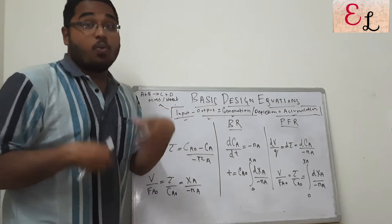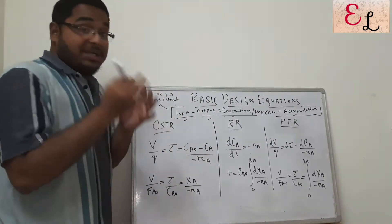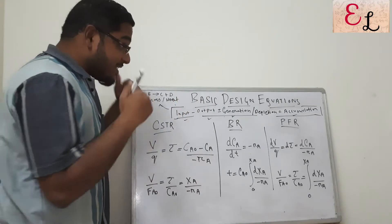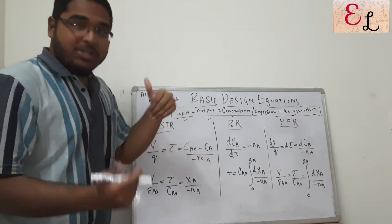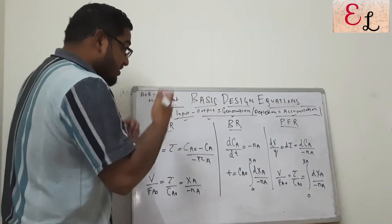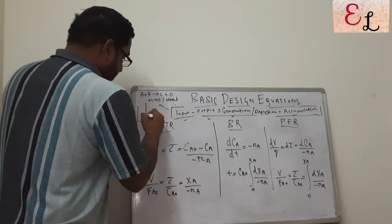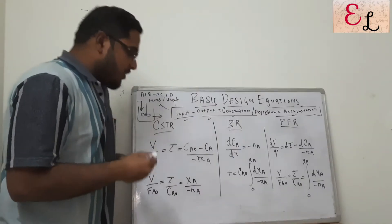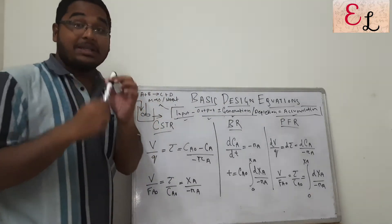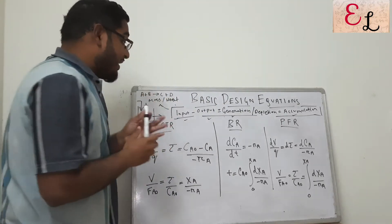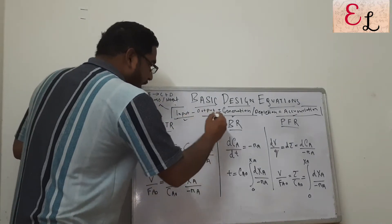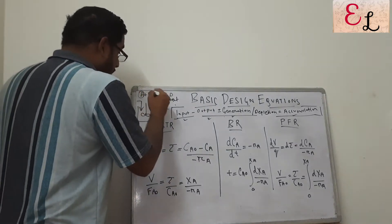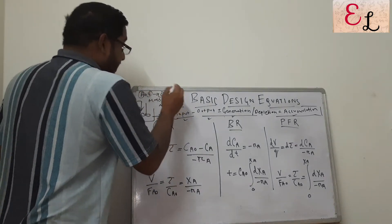Now let's talk about what happens in a continuous stirred tank reactor. As the name suggests, CSTR is a continuous process — the input is continuous, the output is continuous, and there is continuous stirring in the system. There is a continuous input, continuous output, and the steady state of the system is maintained. There will be generation or depletion depending on whether we consider A, B, C, or D.